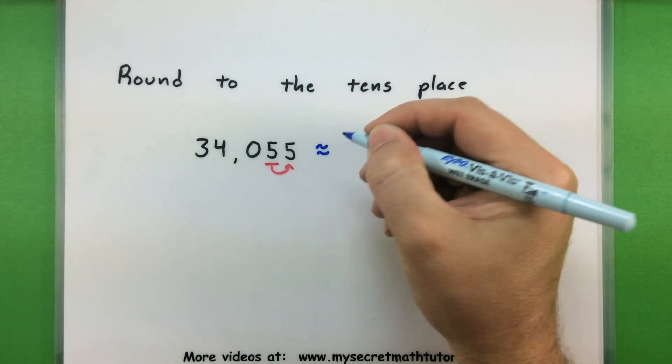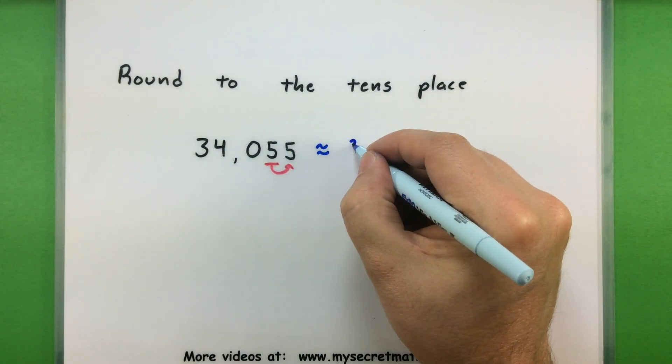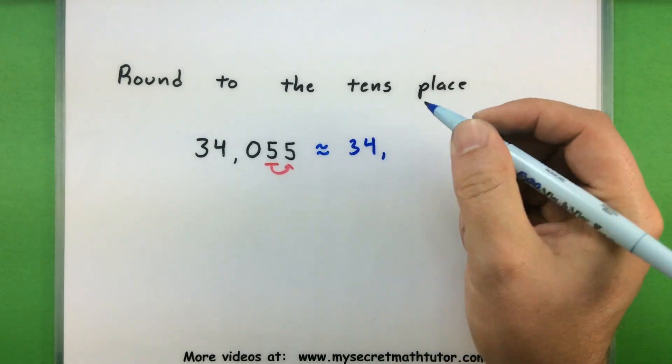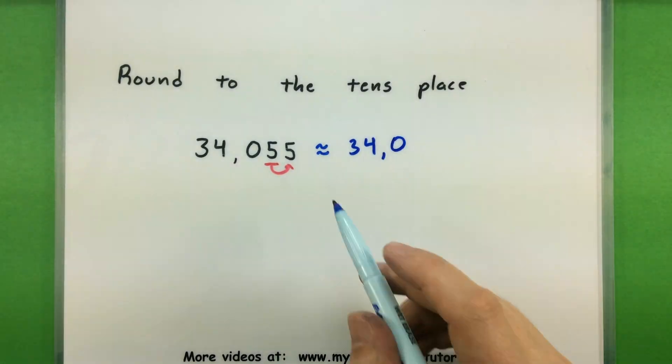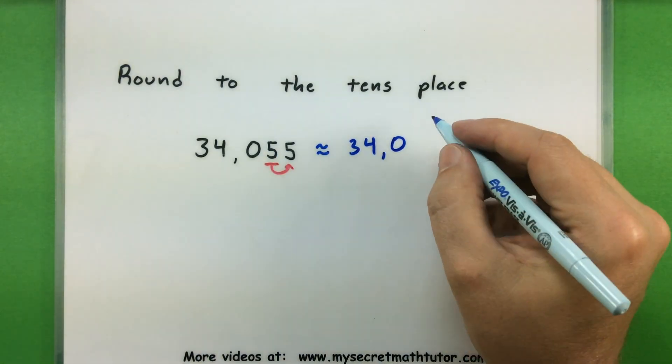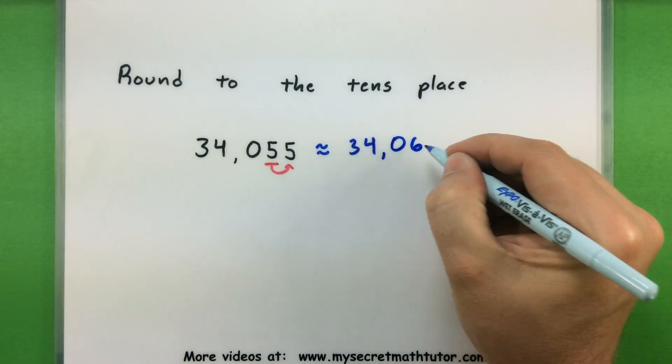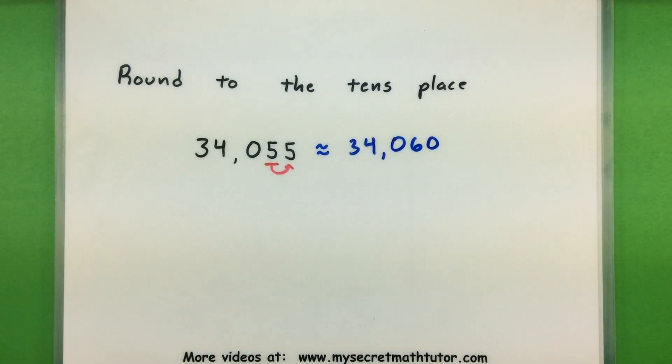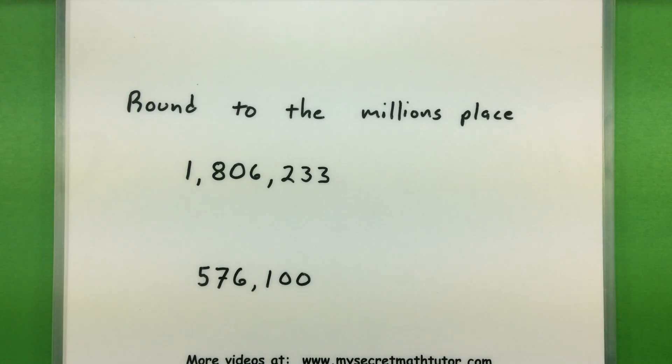Let's see what that turns it into. Everything to the left we're going to keep the same. So I still have a 3, still have a 4, still have a 0. Now what should I do with that 5? Well, we're rounding up, so we're going to change it into a 6, and then zeros after all that rounding is done. Let's do two more examples.